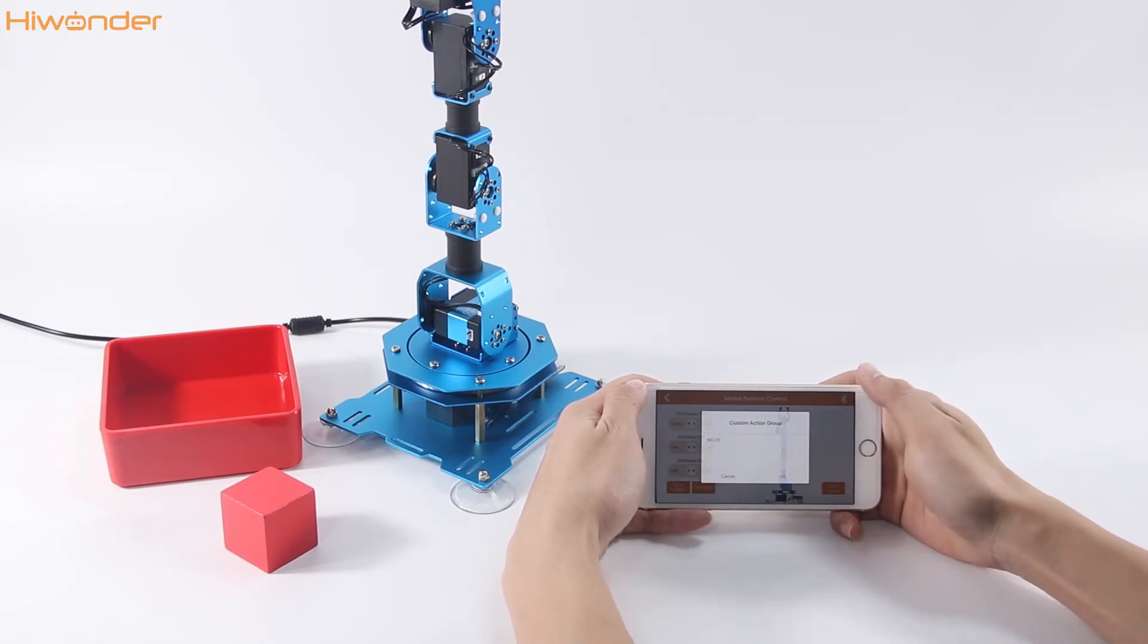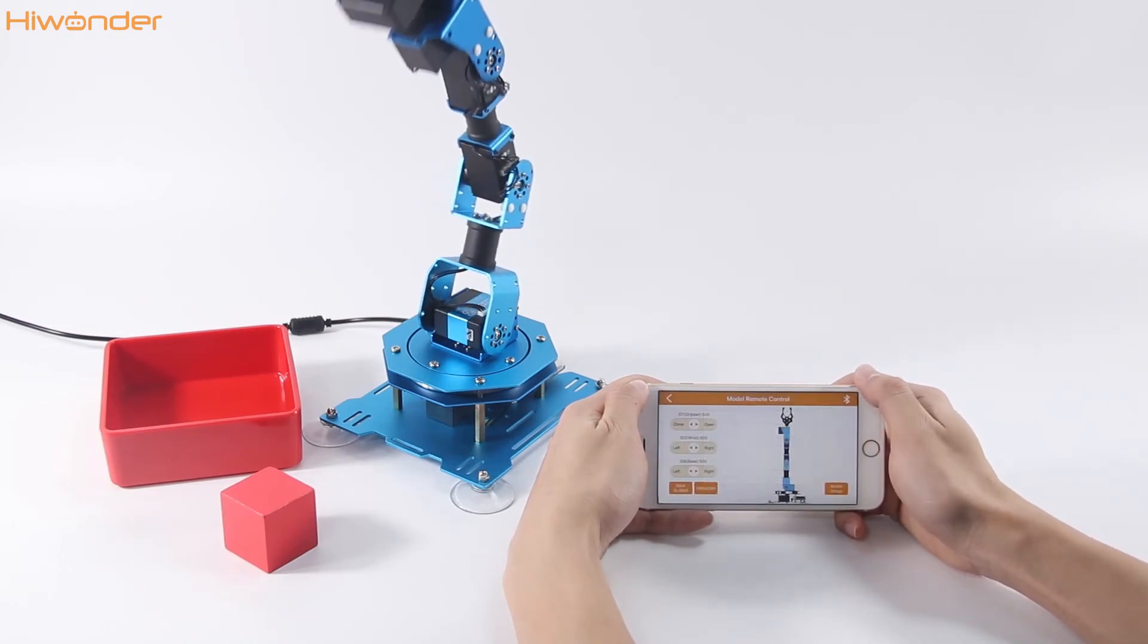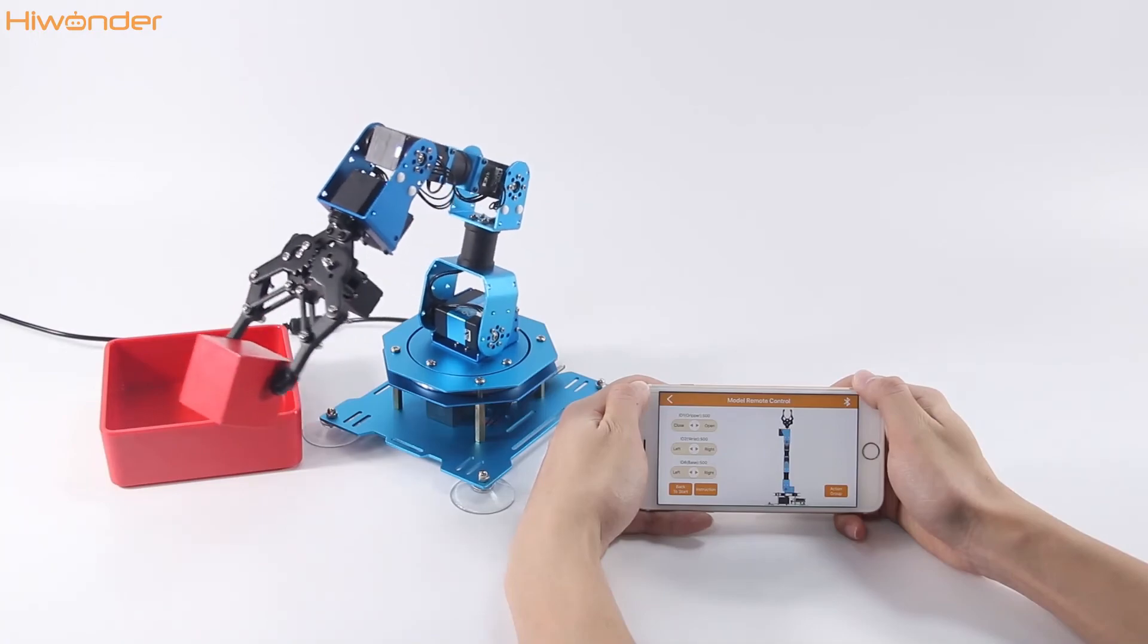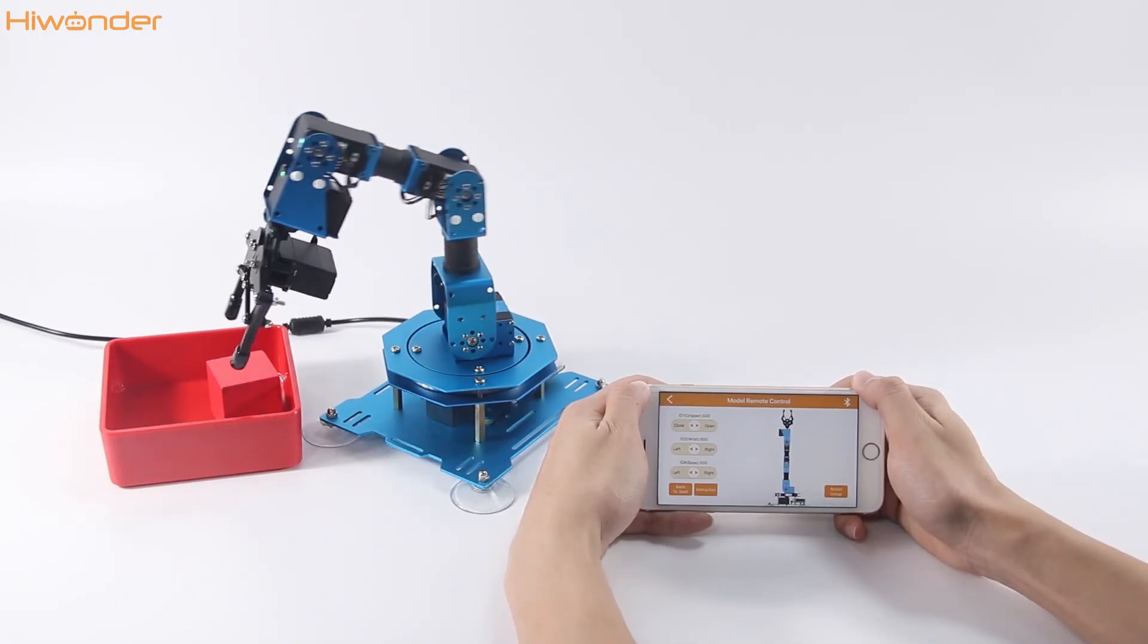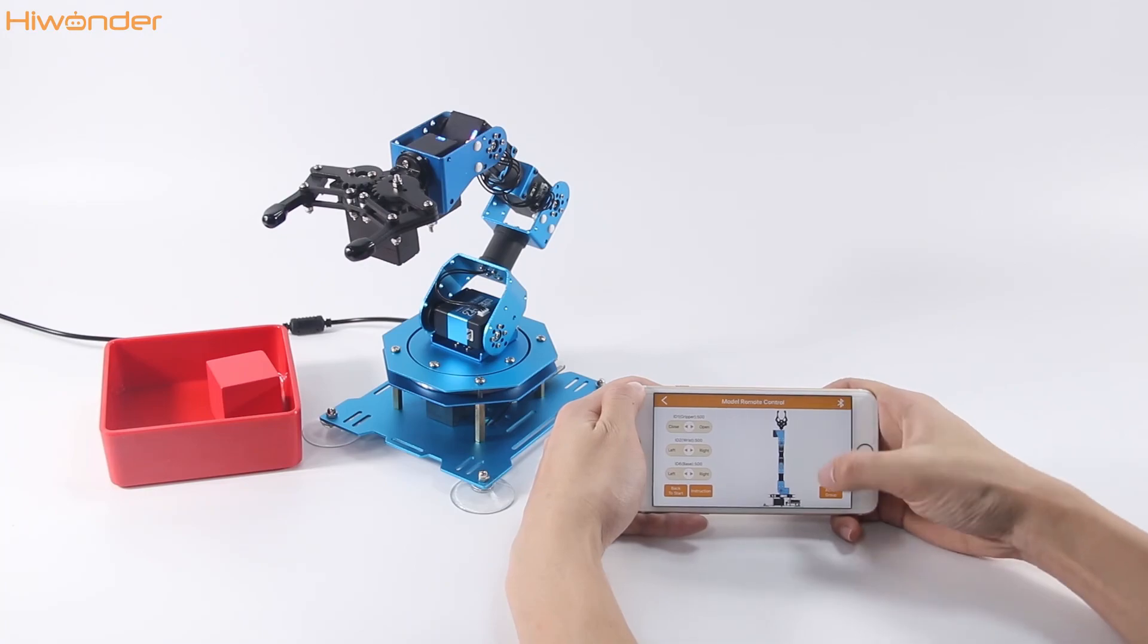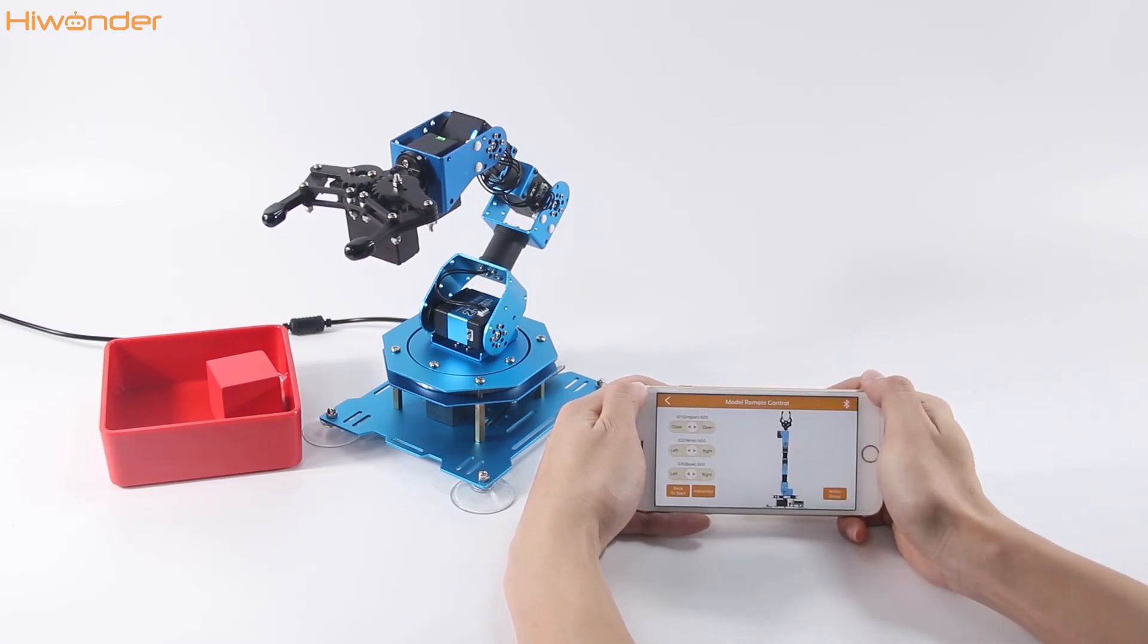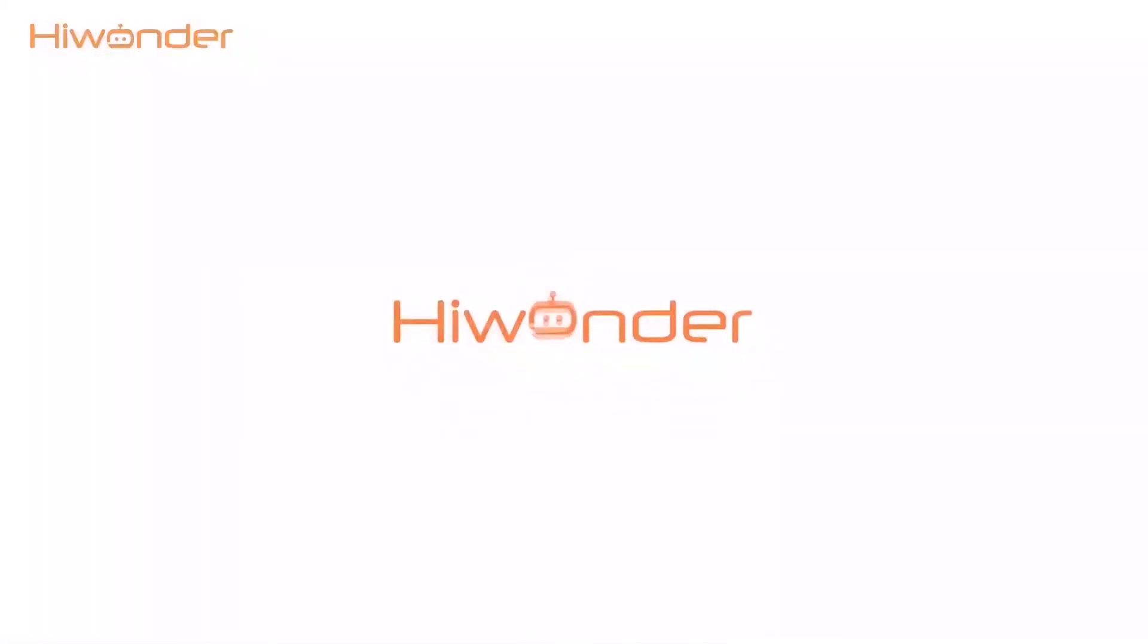Then click the custom button again to choose this action. This is the performance of number 20. If you want to delete the action, you can move here. Create more your own action groups and run it with your mobile phone app. Thanks for your watching.